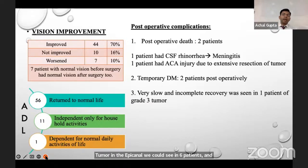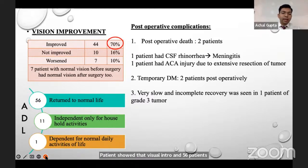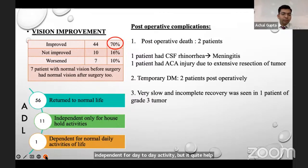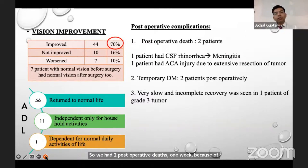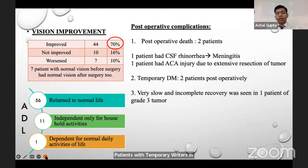Seventy percent of patients showed visual improvement. 56 patients returned to normal life without any help; ten patients were independent for day-to-day activity but required help in their professional life; and one patient was dependent for day-to-day activity. We had two post-operative deaths — one due to CSF rhinorrhea following meningitis and photo-chemical meningitis, and one patient had ACA injury due to extensive resection of the tumor. Two patients developed post-operative diabetes mellitus, and there was very slow, incomplete recovery of vision in one patient with grade 3 tumor.